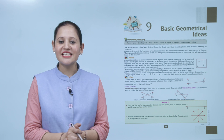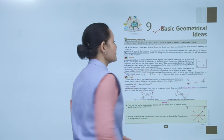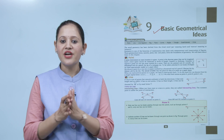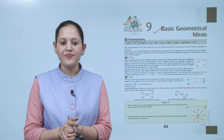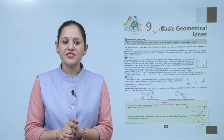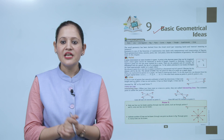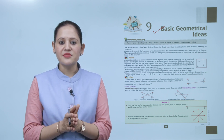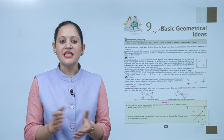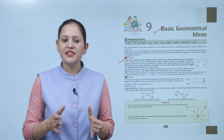Hello kids, welcome to today's maths class. Today we'll do basic geometrical ideas. Our learning objectives are: point, line, line segment, ray, plane, curve, angle, triangle, quadrilateral, and circle. The word geometry has been derived from the Greek word 'geo' meaning earth and 'metry' meaning measure. Geometry is one of the branches of mathematics that deals with the measurement or construction of figures.